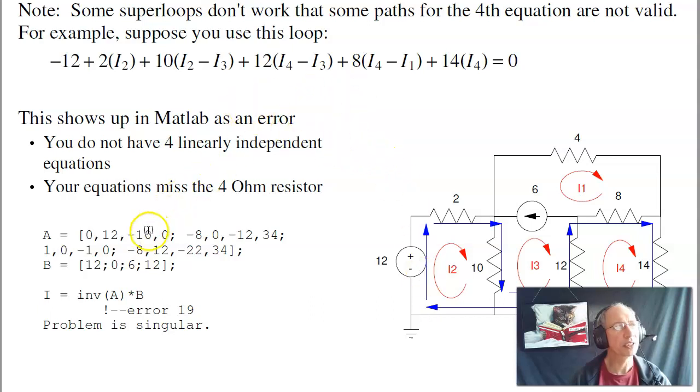If I take this loop equation, throw it in MATLAB, and solve, I get an error. Here the math is trying to tell you something. The challenge is trying to figure out what the math is trying to tell you. What it's telling me is that I do not have four independent equations. This equation right here is actually loop I2 plus loop I4 added together. If I take the same equation and write it down a second time, I don't get more information. It's just a redundant equation. The problem is singular tells me that I just have a redundant equation. I need a fourth equation. It's also telling me that this four-ohm resistor was never in your equations. My equations are not complete.